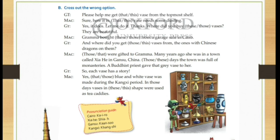A Buddhist priest gave that gray vase to her. So each vase has a story. Mac. Yes. Dash blue. Now again see here one particular we are talking about. So we will use that. Yes. That blue and white vase was made during the Zanki period. In those days vases in dash shape. Which shape we are talking about? This shape. So only one thing we are talking about. So this will come. Not these will come. Because about one bag we are talking.